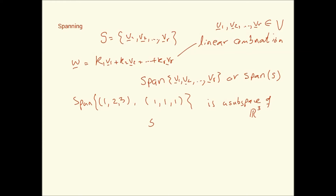This span will satisfy everything — the closure axioms will automatically be satisfied. Why? Because to be in the span, the vectors being produced are simply linear combinations. So the sum of any two such vectors will end up being within the span, and the same thing goes for scalar multiples.